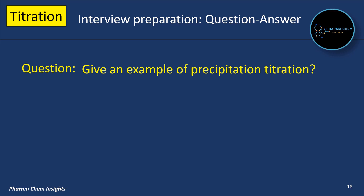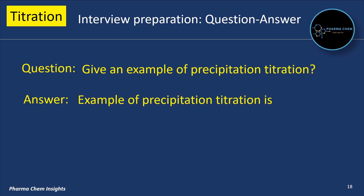Give an example of precipitation titration. An example of precipitation titration is NaCl versus silver nitrate, in which silver chloride is precipitated.